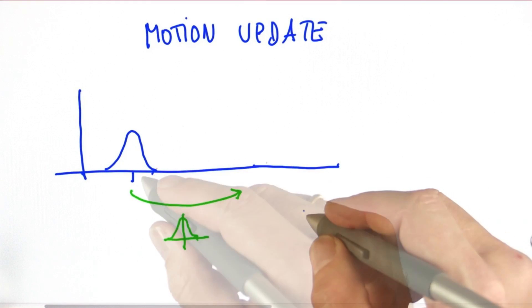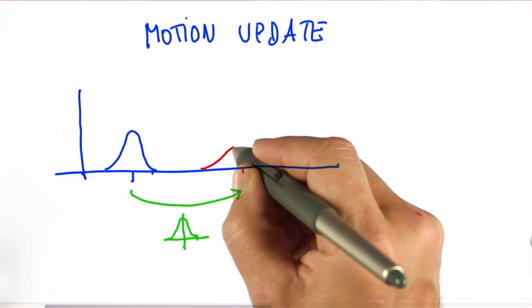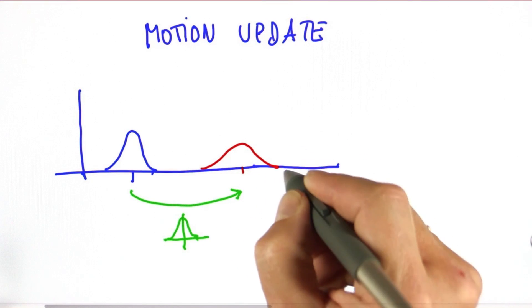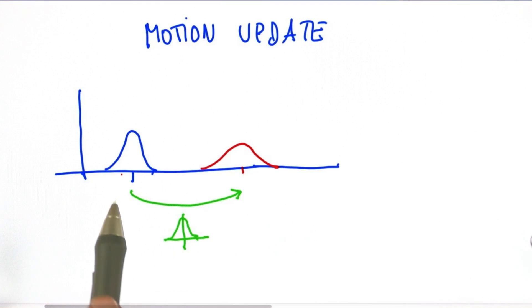Then you arrive at a prediction that adds the motion command to the mean, and it has an increased uncertainty over the initial uncertainty. And intuitively this makes sense. If you move to the right by this distance, in expectation you are exactly where you wish to be, but you've lost information because your motion tends to lose information as manifest by this uncertainty over here.